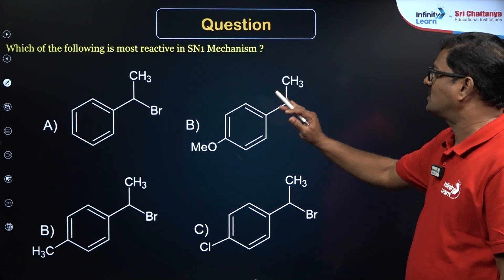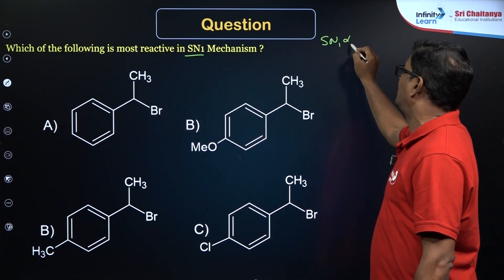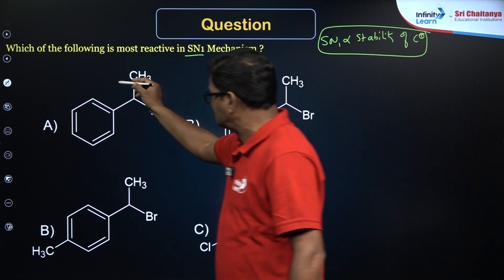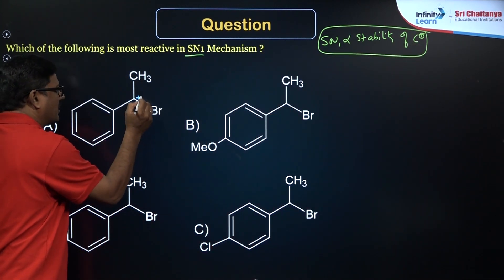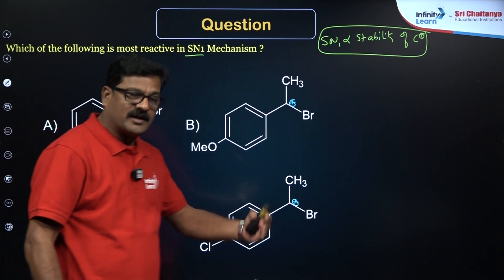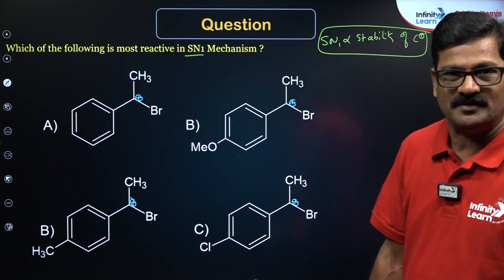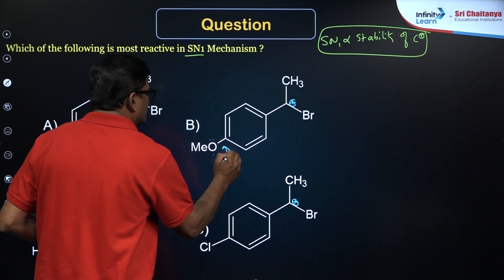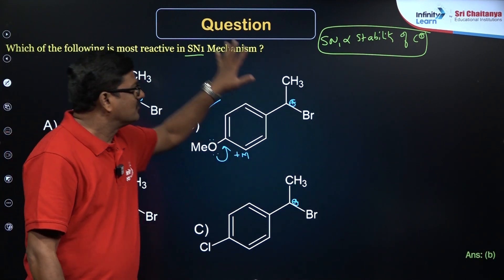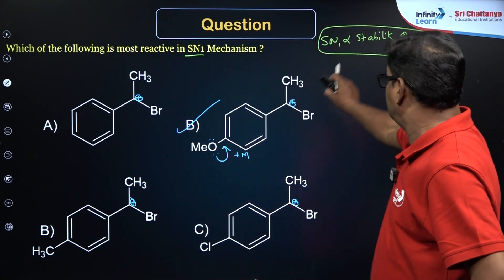Practice Question 4: Which of the following is most reactive towards SN1? SN1 reactivity is directly proportional to carbocation stability, which depends on positive mesomeric effect, hyperconjugation, and inductive effect. Among the carbocations formed from each option, the one with the positive mesomeric effect is the most stable carbocation, so option B is the correct answer.